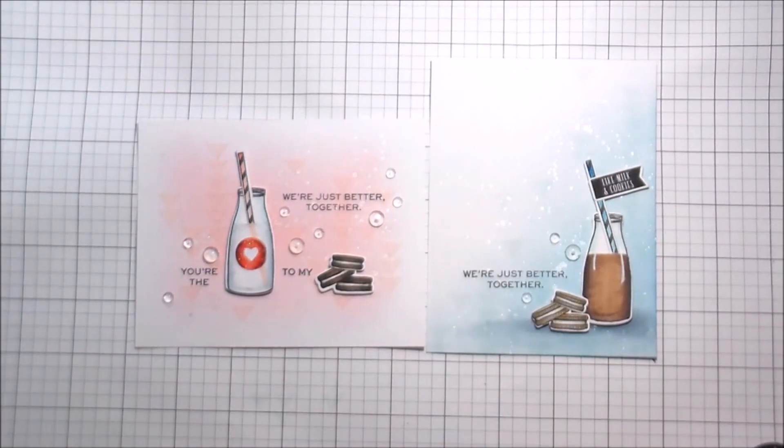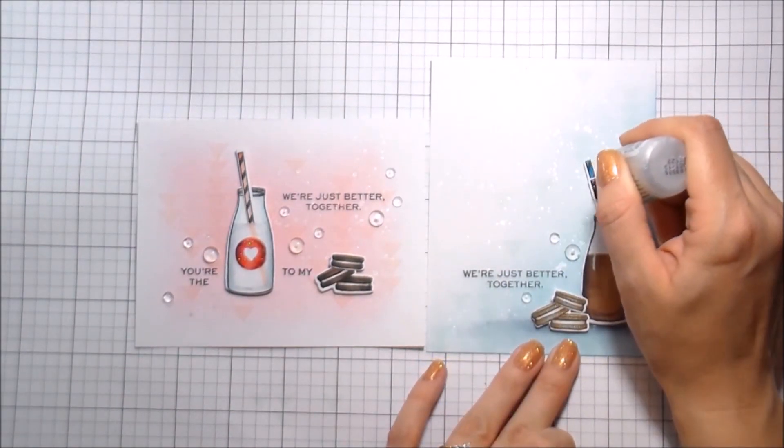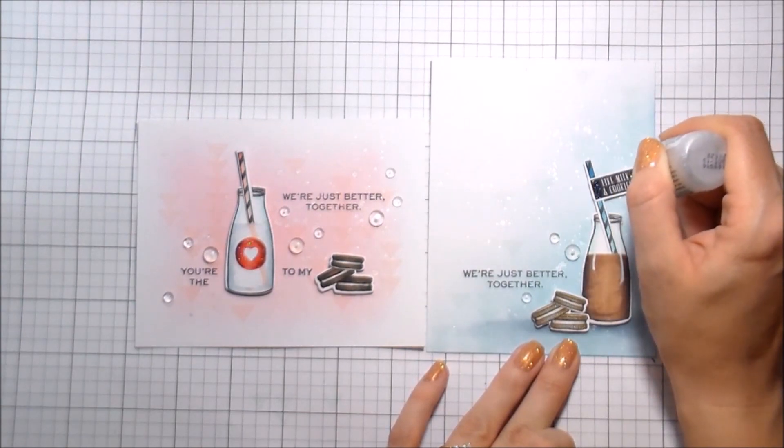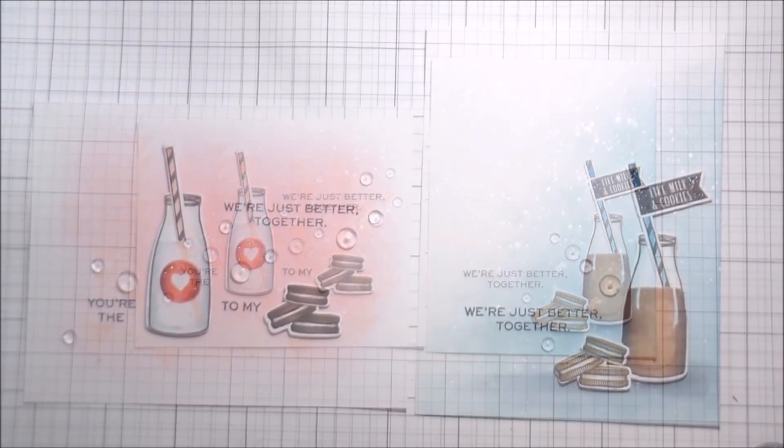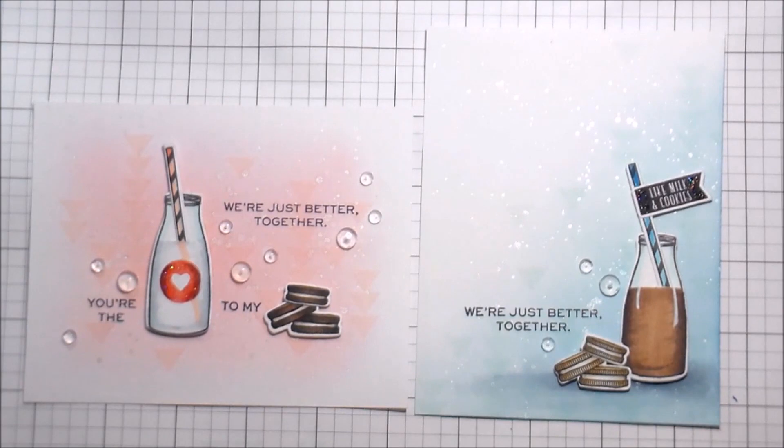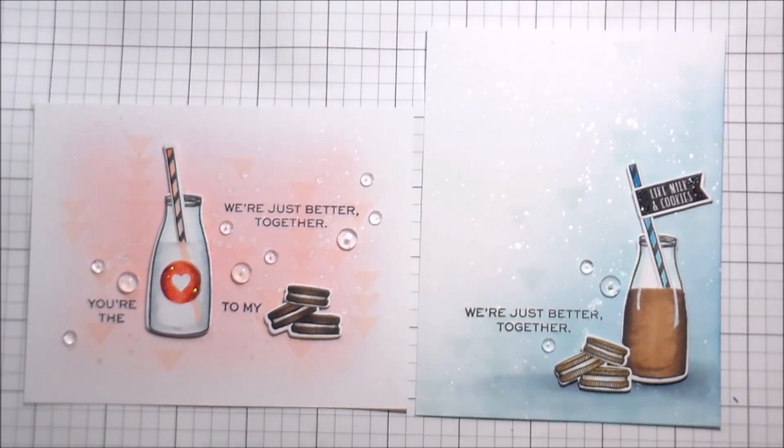Using some Stardust Stickles just to accent some of those extra little points, the little heart that I stamped on the milk glass and the flag that's on the straw. That's the whole card. So I hope you guys found something to inspire you. Thank you so much for joining me and I'll catch you on the next video. Bye!